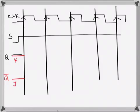So J is zero, K is one. So when the clock comes, Q will become zero, and it will stay zero while Q-bar will become one.